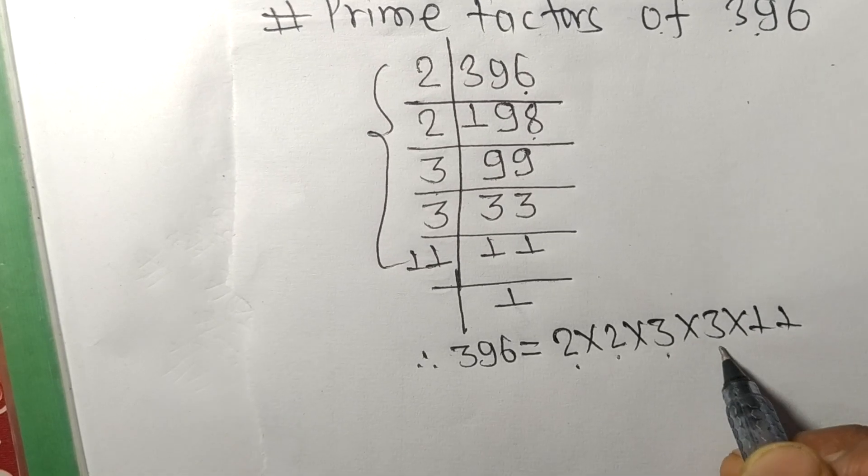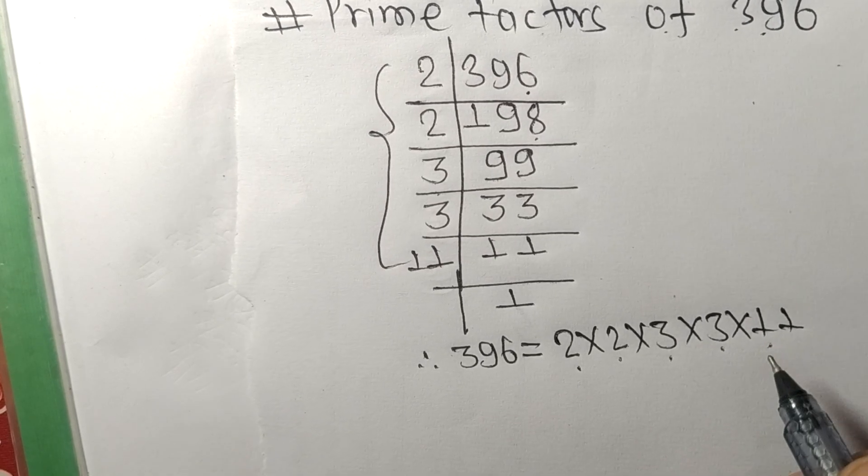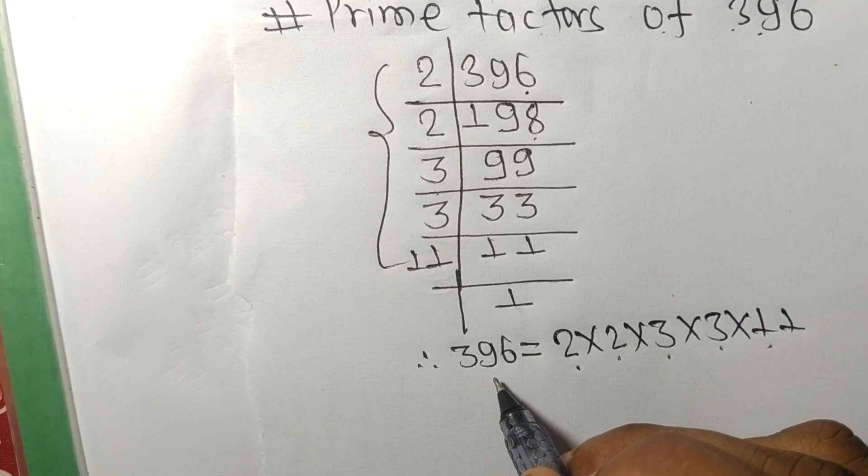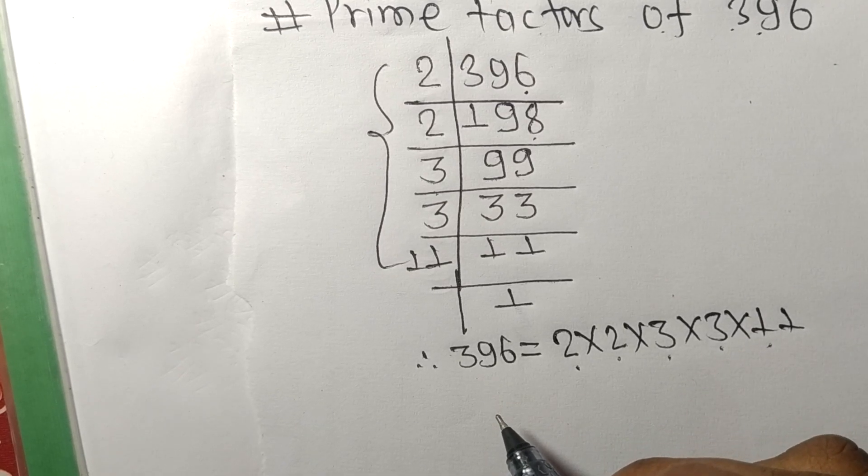2, 2, 3, 3, and 11 are the prime factors of 396. So this much for today, and thanks for watching.